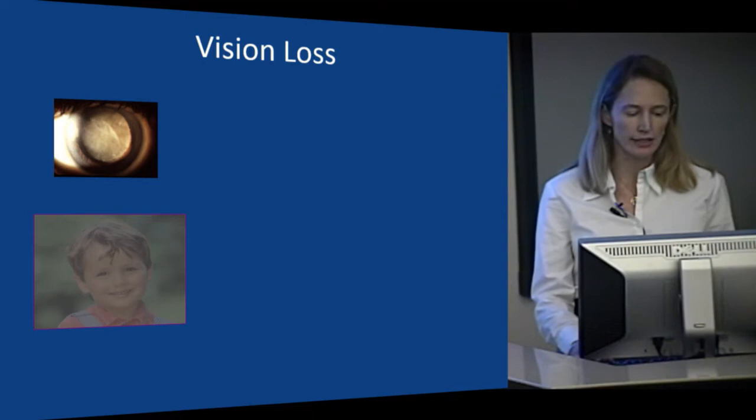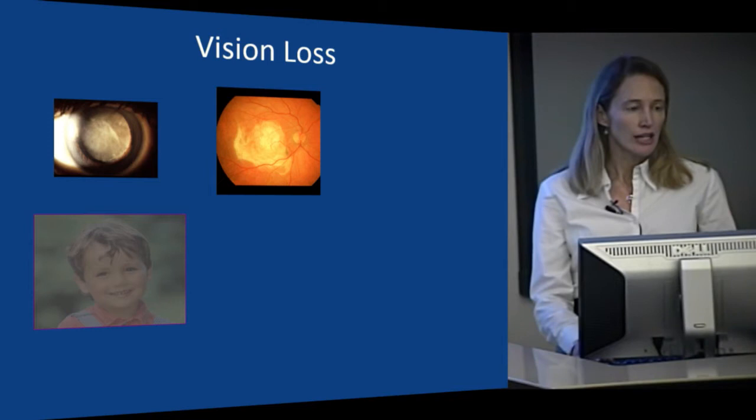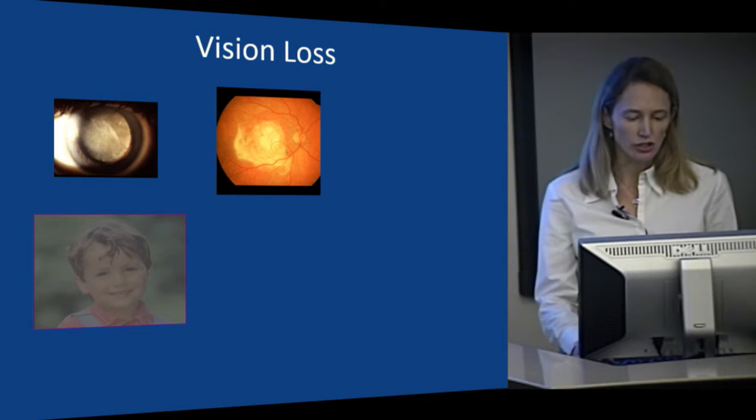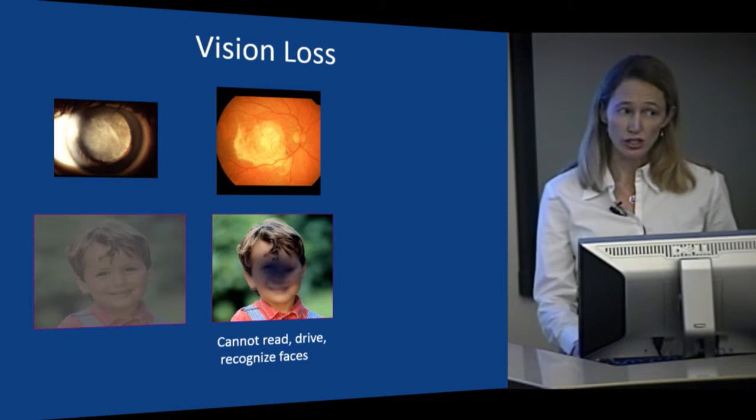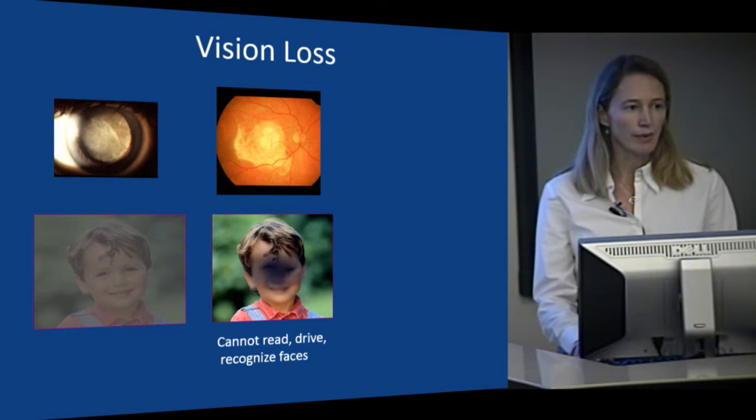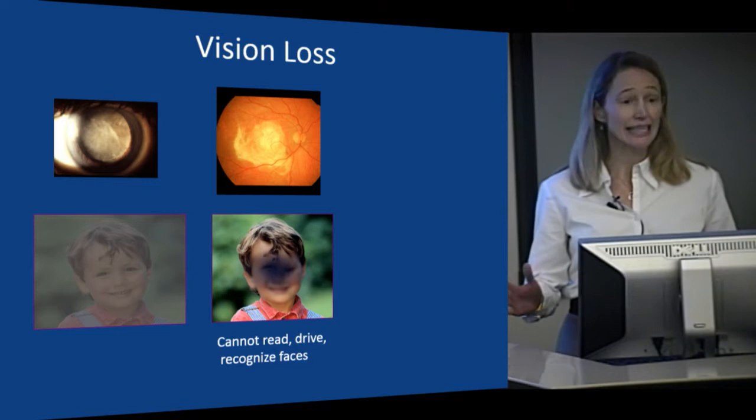Macular degeneration, on the other hand, causes changes in the center part of the retina or the macula, which can be scarring or neovascularization, and that tends to lead to a central scotoma. Macular degeneration can be devastating in that patients may lose the ability to read or recognize faces or drive, but they almost always retain their peripheral vision. A patient may be legally blind from macular degeneration but not walking around with a cane, because they can ambulate without bumping into things and can usually live independently.